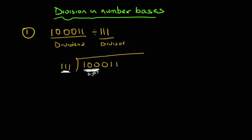Is '100' bigger than '111'? No, it's smaller, so I put zero on top. Zero times '111' gives zero, so I subtract zero from '100', getting zero. I then bring down the next digit, giving me '1000'.